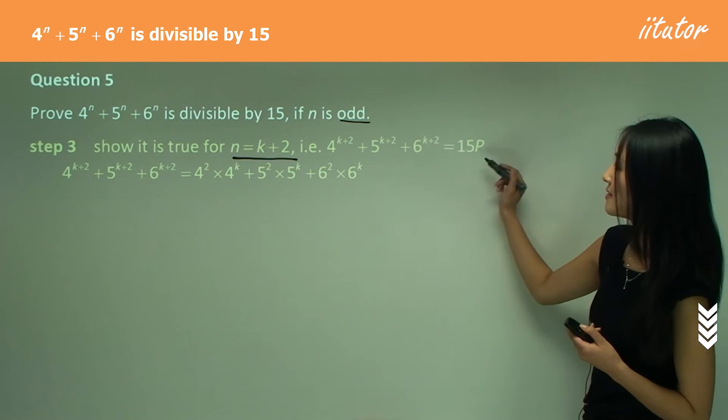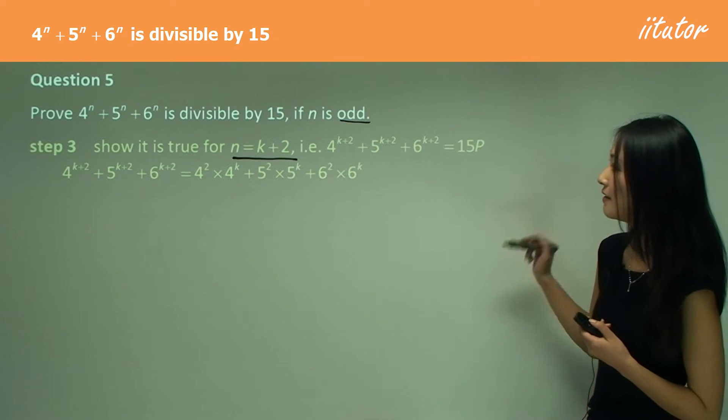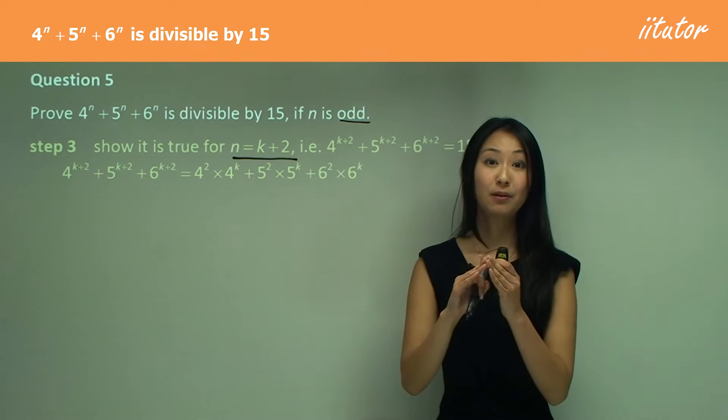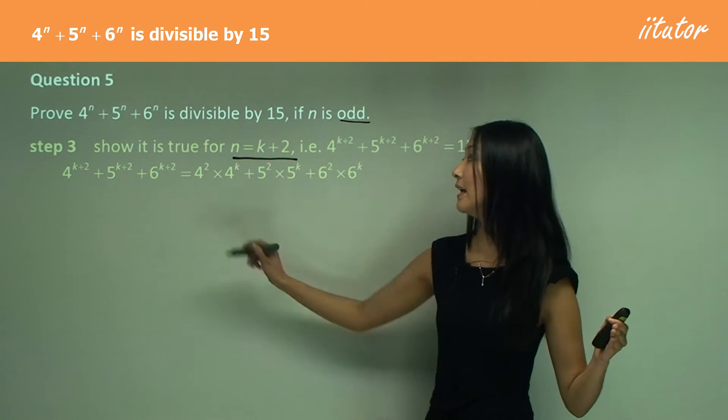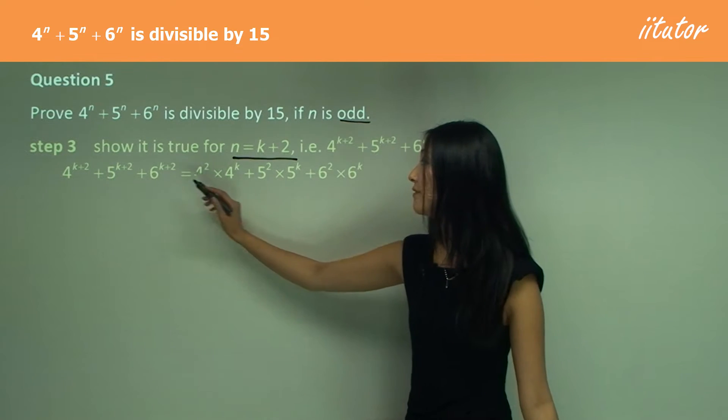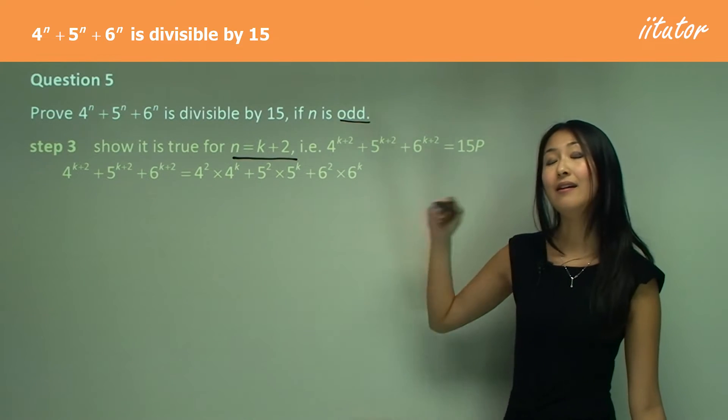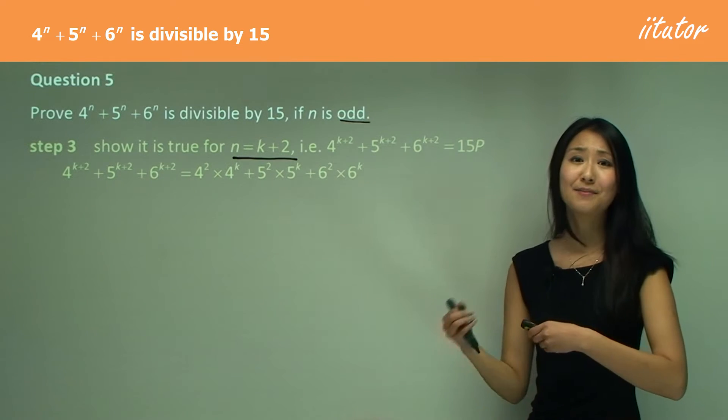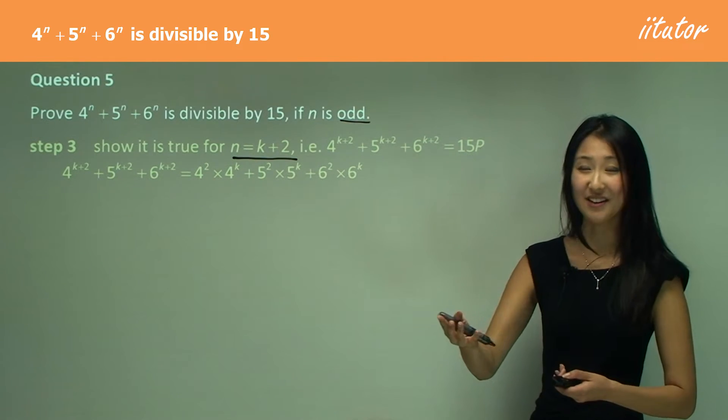To show this is divisible by 15, first thing I want to do is manipulate that. What I've done here is I've separated all the k plus 2 into to the power of 2 and to the power of k. For 4, 5, and 6, this is what I've done. Now I want us to consider the assumption. We've got to work the assumption in there somehow.